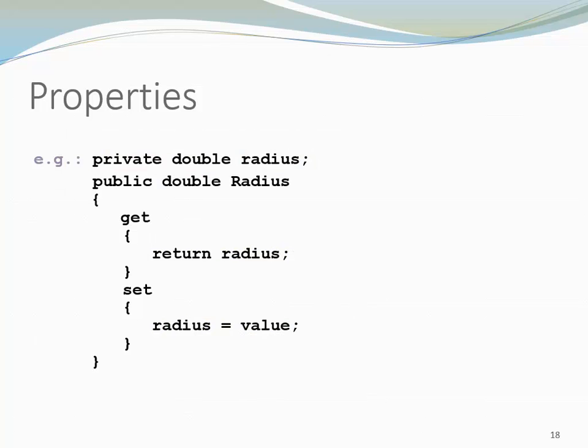Here we have an example that includes an implementation for the get and the set code blocks. Notice the backing field. The property exposes data to other classes. However, there needs to be a storage location that actually stores the data. We talk about a backing store and if that storage location happens to be a field, we talk about a backing field.